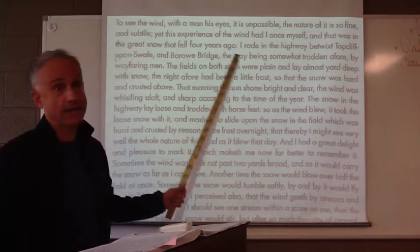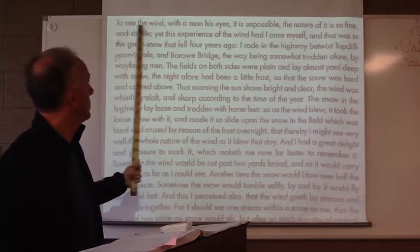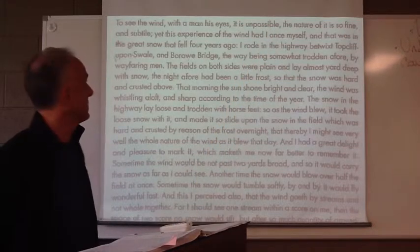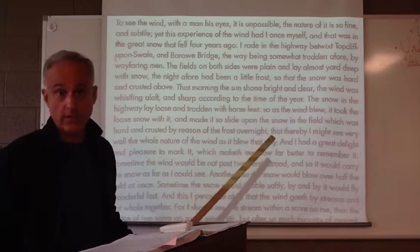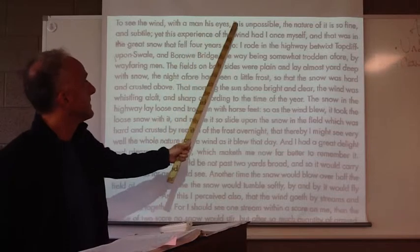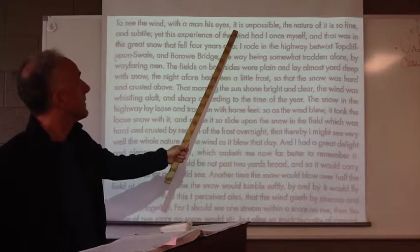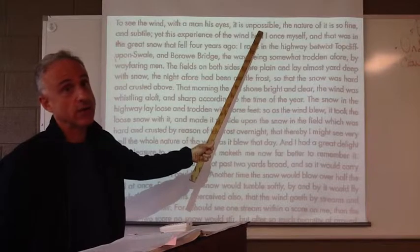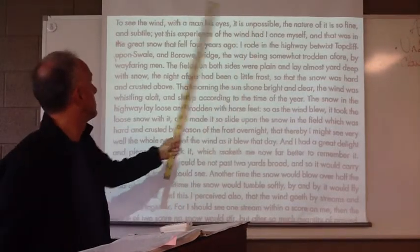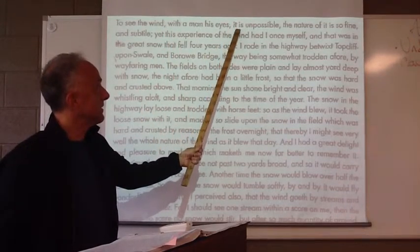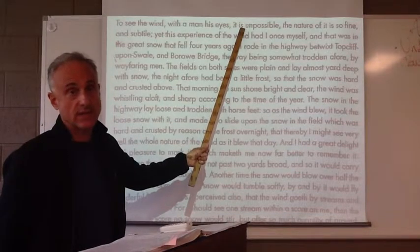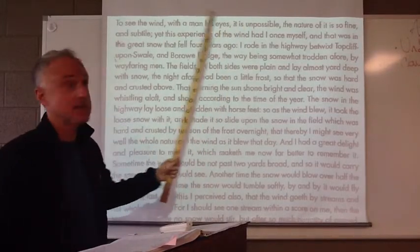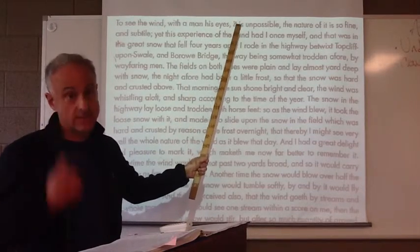We start off with the first line. We're not going to do every single line, but: 'To see the wind with a man his eyes, it is impossible.' This is my subject, this is my verb, and 'impossible' — it is impossible to see the wind. We have our subject and then our predicate. Most of the predicate of the sentence precedes the subject, so this is an inverted sentence.